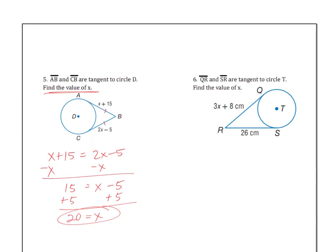Will you take a minute, pause the video, and try number six? Since RQ and RS are both tangents, they should be congruent. So 3X plus 8 should equal the 26. Subtract 8 from both sides.